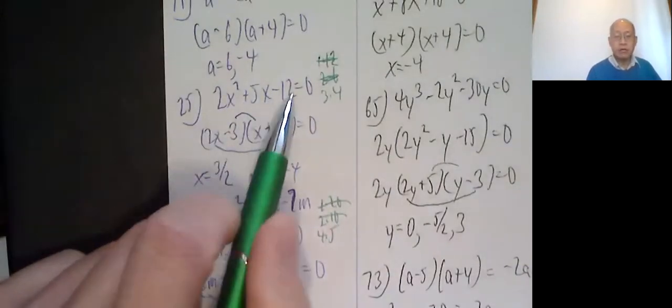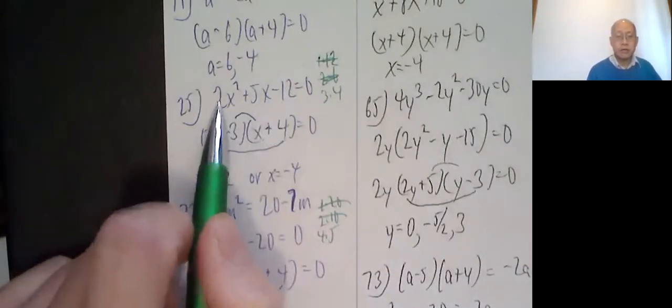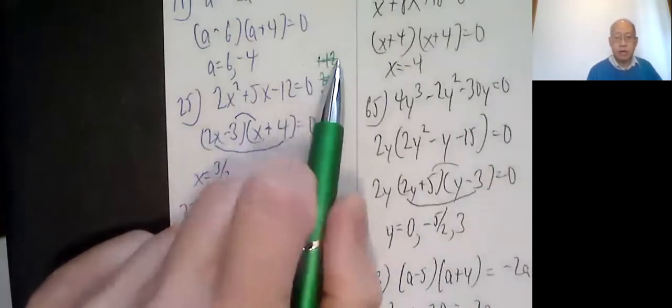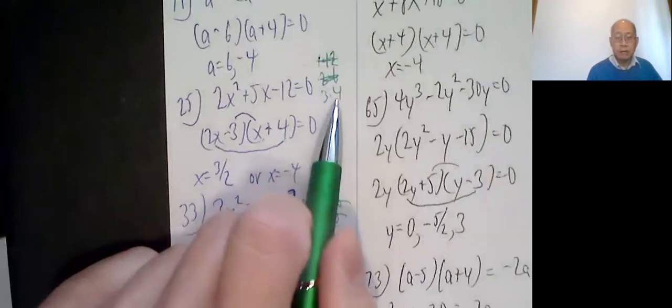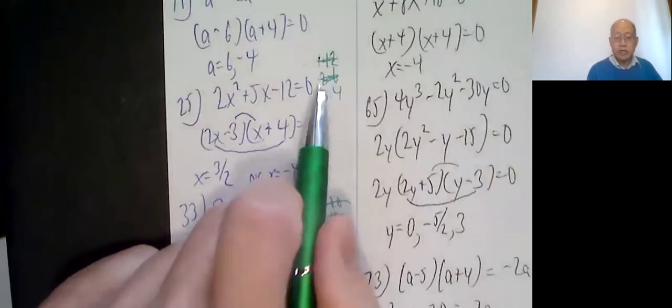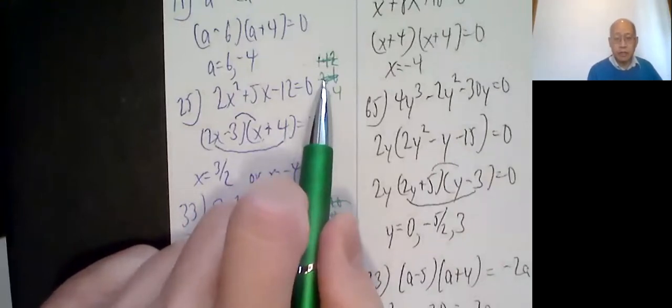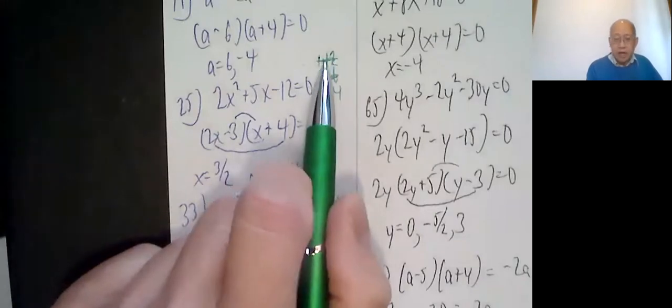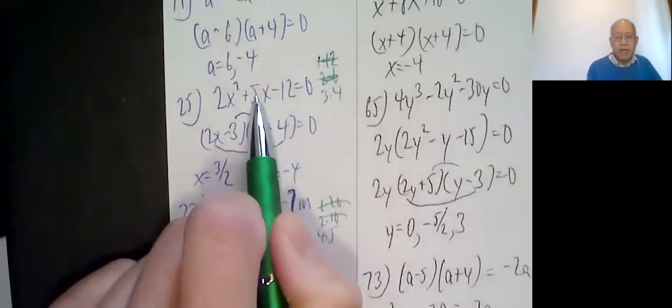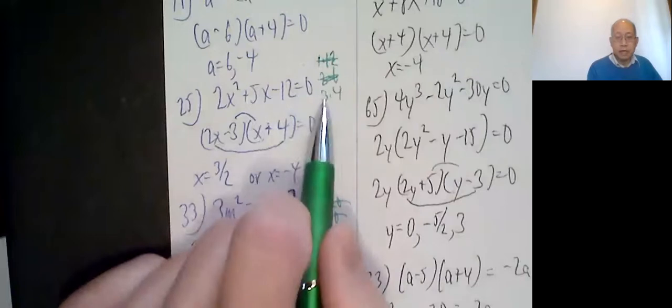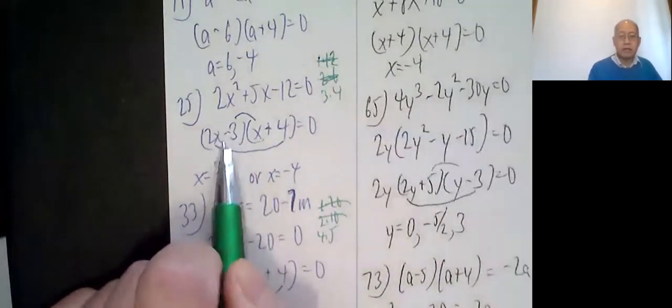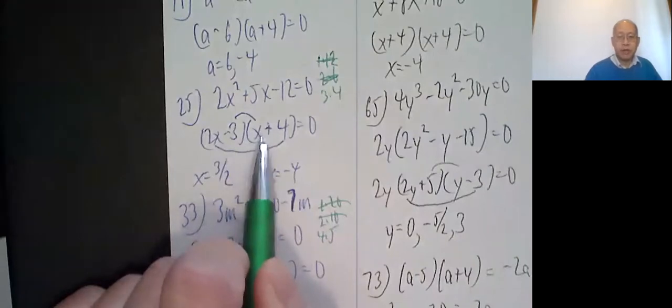2x squared plus 5x minus 12 equals zero. 2x squared has to be 2x and x. How do I get 12? 1 times 12, 2 times 6, 3 times 4. 2 and 6 is not possible, those are both even, so if I make combinations of even, I'm not going to get an odd. 1 and 12 is possible, but to get a 5, it's most likely not. Most likely smaller numbers like 3 and 4, and this is the correct way it works if you foil it back out: 2x minus 3, x plus 4 equals zero.